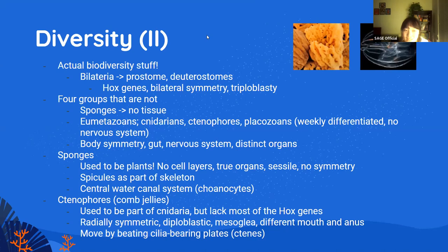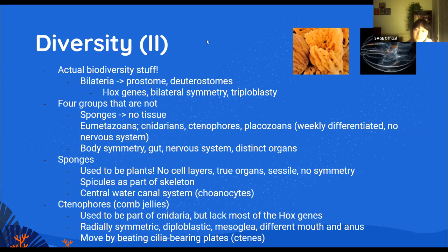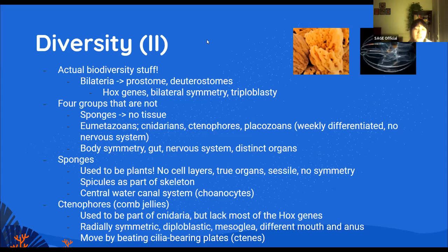Sponges, or phylum Porifera, are animals that don't have cell layers, true organs, movement, or symmetry. We still classify them as animals because of DNA sequence. Because they lack all of that, scientists used to classify them as plants, but now we know they're not. Unique characteristics about sponges: they have tiny structures called spicules that are part of their skeleton, which help us further classify them — some are called glass sponges, made out of silica. They also have a unique central water canal system that helps move nutrients and water through, with the help of cells called choanocytes.